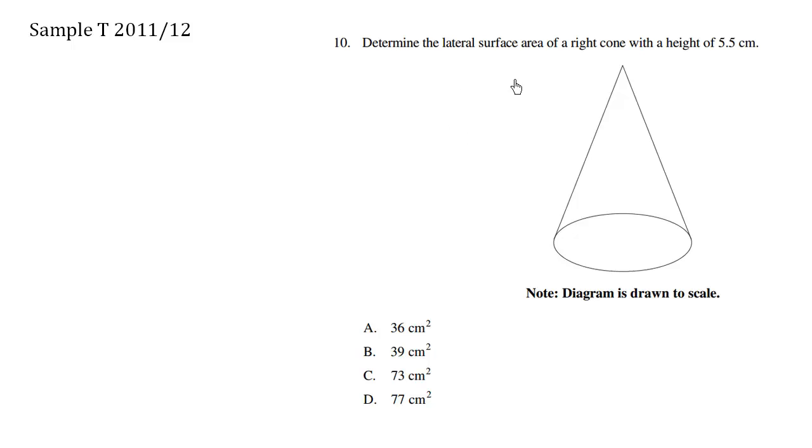Determine the lateral surface area of a right cone with a height of 5.5 centimeters. So we're given the height. From here to here, the height is going to be 5.5 centimeters. Now the actual radius here is not given. It's for us to find out.